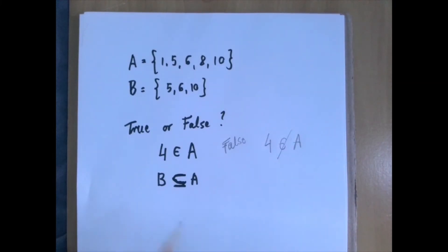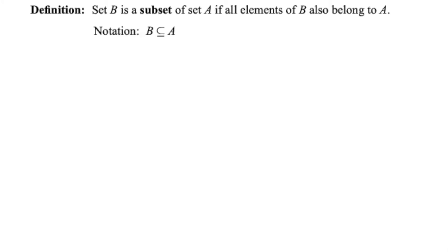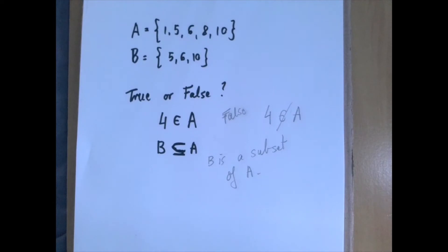Now, the second statement is: B is a subset of A. B is a subset of A, denoted like this, if and only if every element of B is also an element of A. What that means, intuitively, is that B is entirely contained within A.